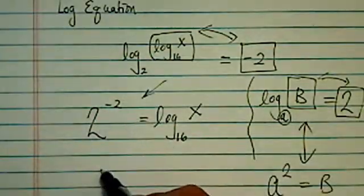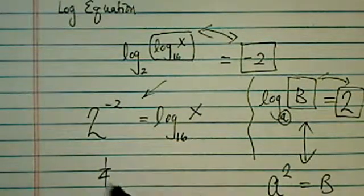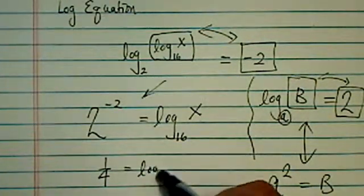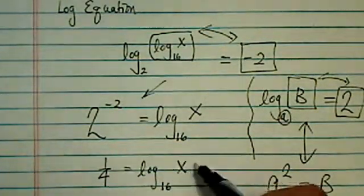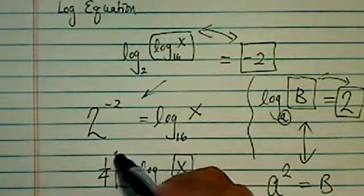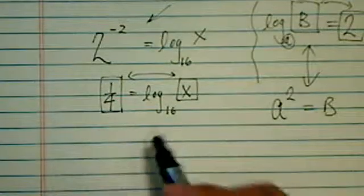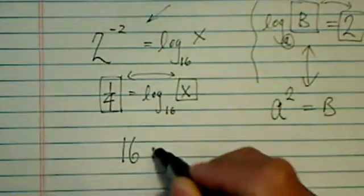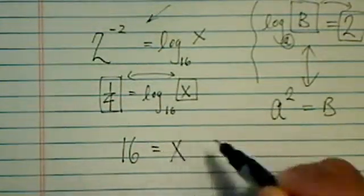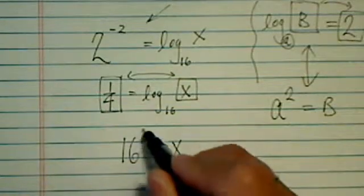And now 2 to the minus 2 is 1 over 4 is equal to log base 16 of X. Now let's swap those two boxes and keep the same base here. 16 to the quarter is equal to X.